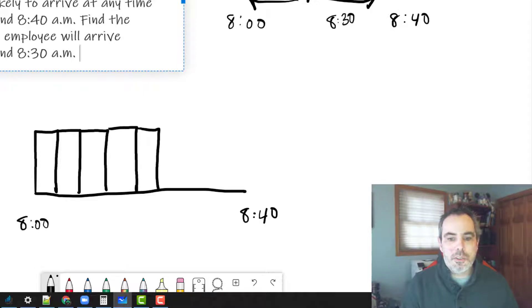Five times six is 30, so one, two, three, four, five, six, seven, eight, poorly drawn, but hopefully it gets the point across. Here's 8 o'clock, 8:05, 8:10, 8:15, 8:20, 8:25, 8:30, 8:35, 8:40.